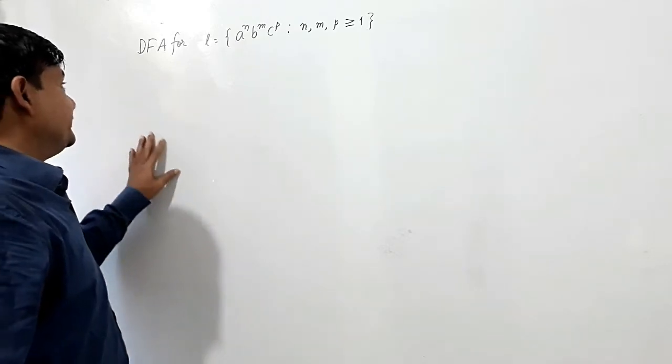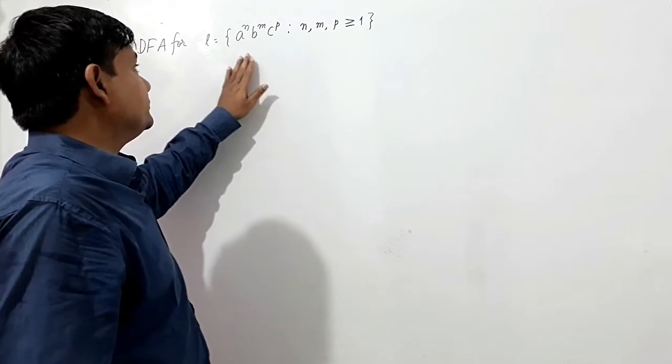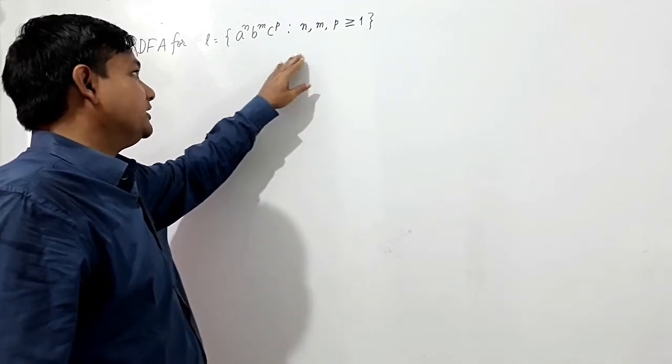Here we shall design a DFA for language L equal to a to the power n, b to the power m, c to the power p such that n,